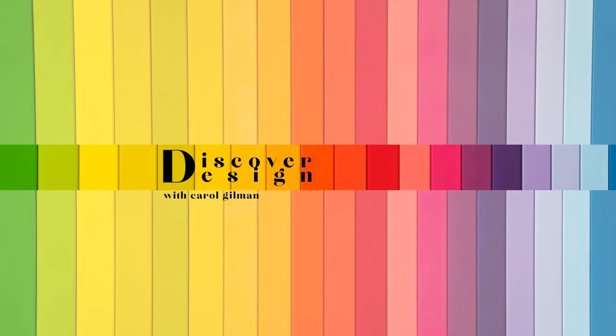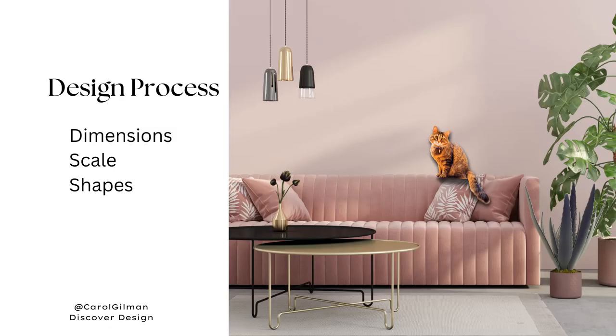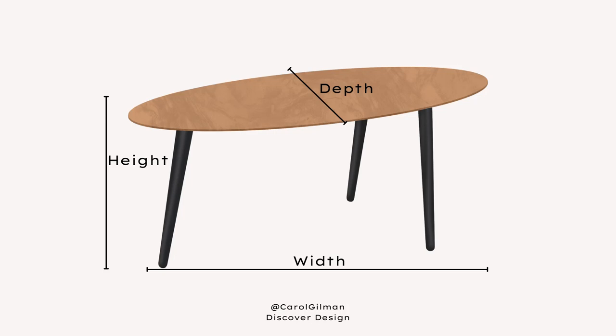Hi everyone, welcome to my channel! Today's episode is about figuring out the size of a coffee table. In our design process, we're going to look at three key topics: dimensions, scale, and shapes. For dimensions, we want to know the width, height, and depth of a coffee table.